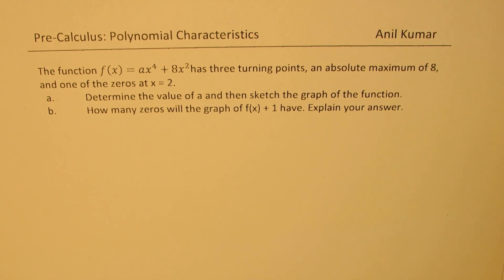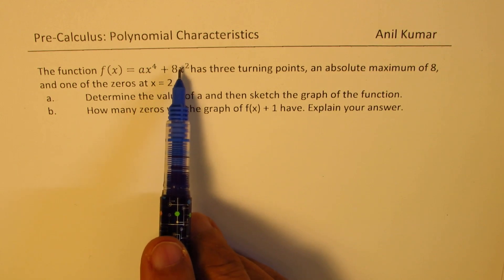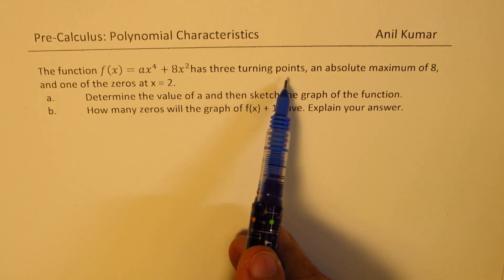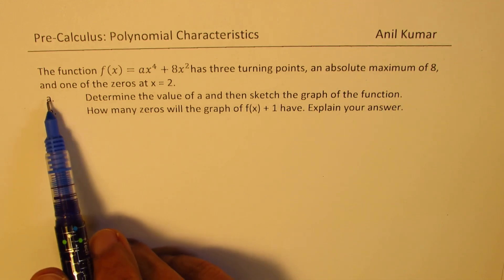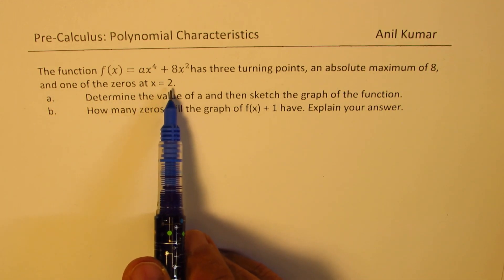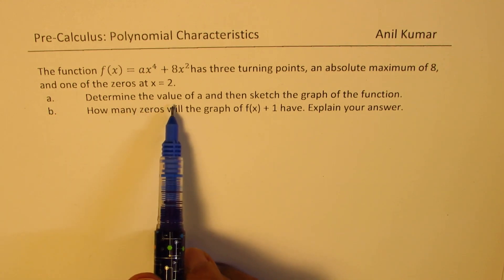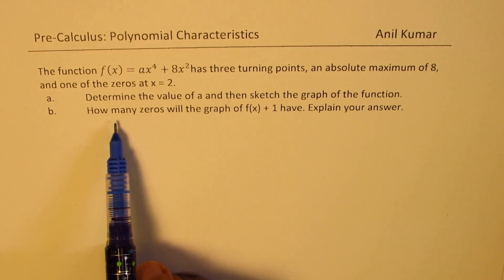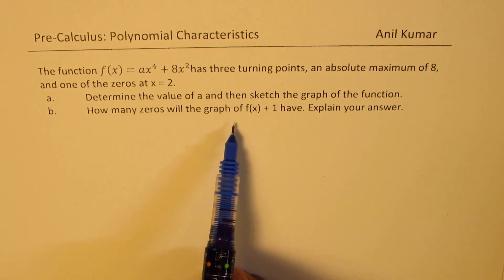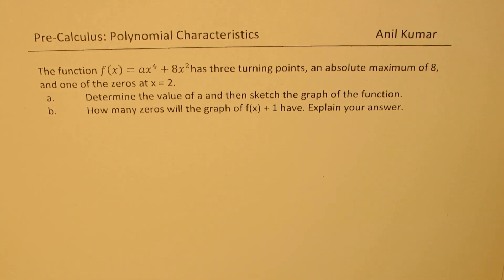A function f(x) equals ax to the power of 4 plus 8x squared has three turning points, an absolute maximum of 8, and one of the zeros at x equals 2. Part A of the question is: determine the value of a and then sketch the graph of the function. Part B: How many zeros will the graph of f(x) + 1 have? Explain your answer.